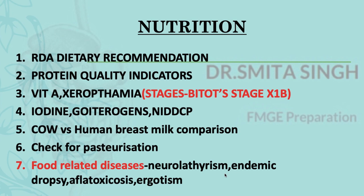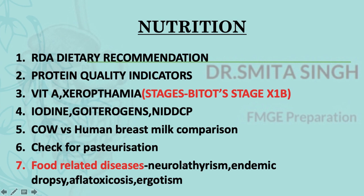Also cover iodine, goitrogens, and the national program related to iodine. The cow milk versus human breast milk comparison is very important — they ask one question from this area almost every year. Also study tests to check pasteurization levels. Food-related diseases are important too, as they can be framed as clinical questions: neurolathyrism, endemic dropsy, aflatoxicosis, and ergotism are the four most important ones.